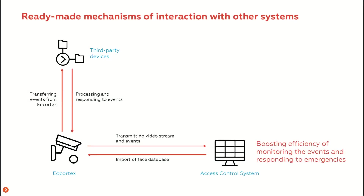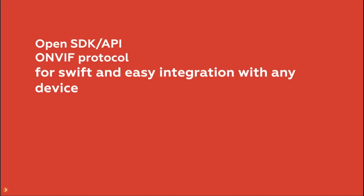Thanks to video analytic modules, EO Cortex detects different events — from line crossings to the absence of a hard hat on a person's head. Based on these events, third-party systems can make decisions such as turning on an alarm or sending a frame to a labor safety department. Integration is made available through SDK, REST API, and ONVIF protocols, which are open so you can perform integration yourself if necessary.